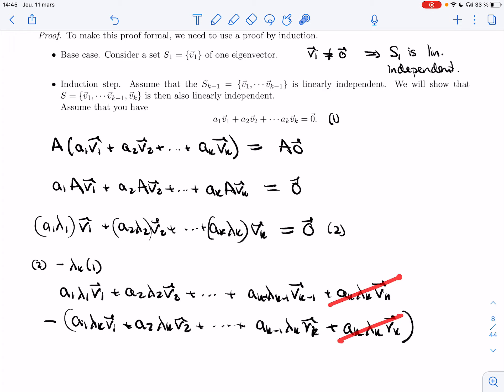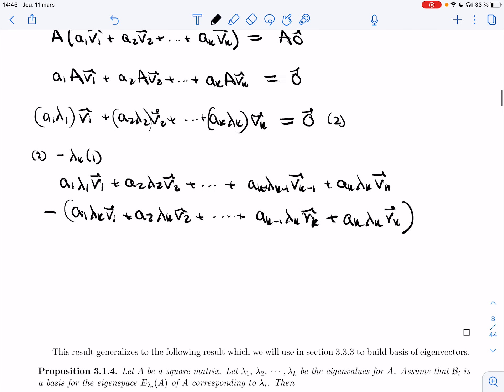All the other ones, since the lambdas don't match, I'm going to get, so this is going to be equal to the zero vector. And so I'm going to get that a_1(lambda_1 - lambda_k)v_1, plus a_2(lambda_2 - lambda_k)v_2, plus a_{k-1}(lambda_{k-1} - lambda_k)v_{k-1}. But now this is a dependence relation on the smaller set,